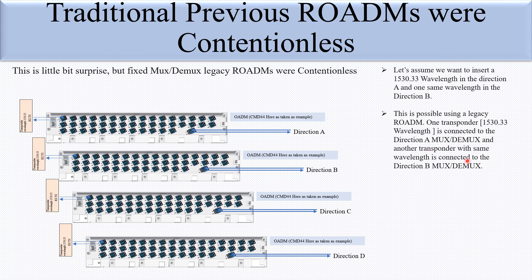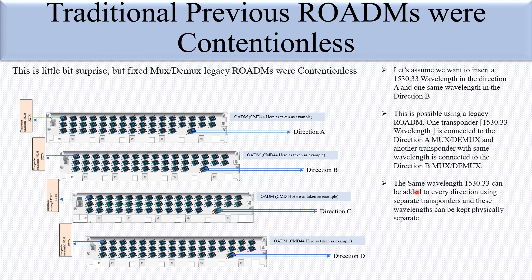This is possible using a legacy ROADM where one transponder is connected to the direction A mux/dmux and another transponder with the same wavelength is connected to the direction B mux/dmux. The same wavelength can be added to every direction using separate transponders, and these wavelengths can be kept physically separate. However, colorless and directionless features are not present here.